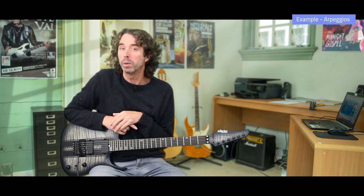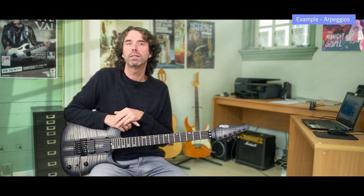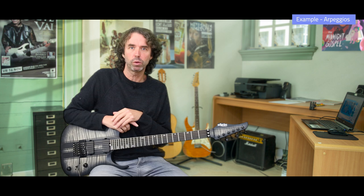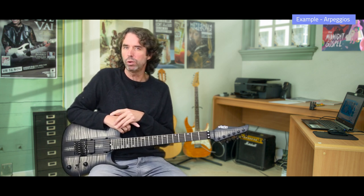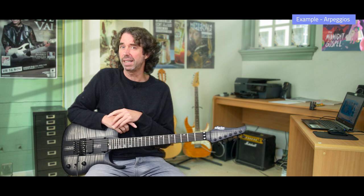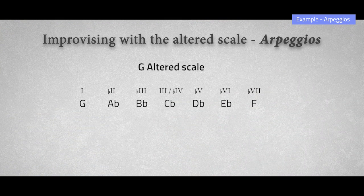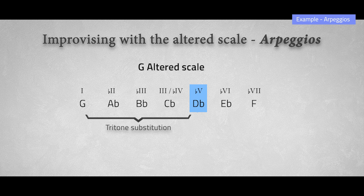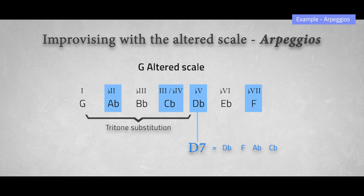Before soloing with this scale, keep in mind that it's best practice to let your licks resolve into a chord tone in order to sound like you know what you're doing — otherwise the lick could sound as if you made a mistake. One way to improvise with the altered scale is using arpeggios found within the scale. One possibility is using the dominant seven arpeggio of the diminished fifth, which is based on a tritone substitution. In G altered, this would be the Db7 arpeggio. The notes of the Db7 chord are Db, F, Ab, and Cb — which is enharmonically the same as B.